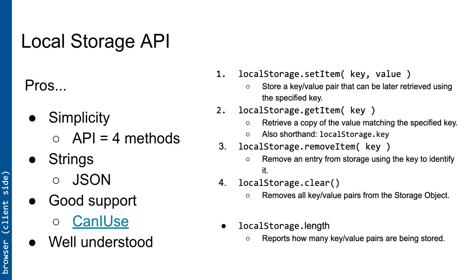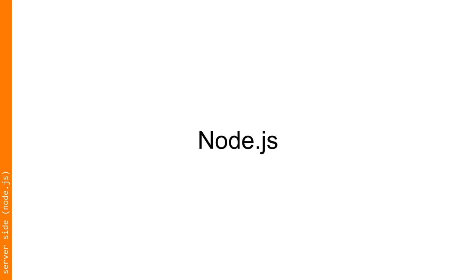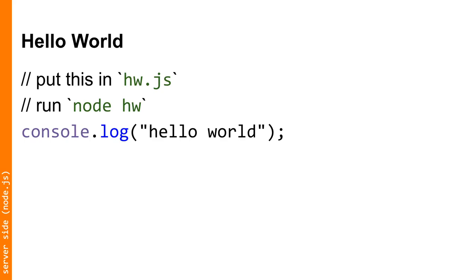Now let's talk about the server side. It used to be that web servers were typically written in something like Perl, PHP, JSP, or some other language, and JavaScript only ran in browsers. That's not the case anymore, which is good because it reduces the burden on developers — instead of writing two languages, you're writing one. Node is a fairly simple framework for writing JavaScript applications that run on their own; it's comprised of the V8 JavaScript engine with extensible modules.